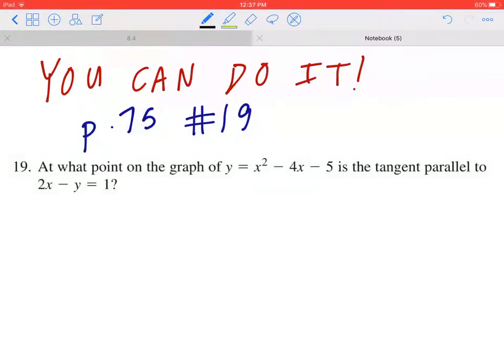Hi everyone, let's take a look at number 19 on page 75. At what point on the graph of y equals x squared minus 4x minus 5 is the tangent parallel to 2x minus y equals 1?